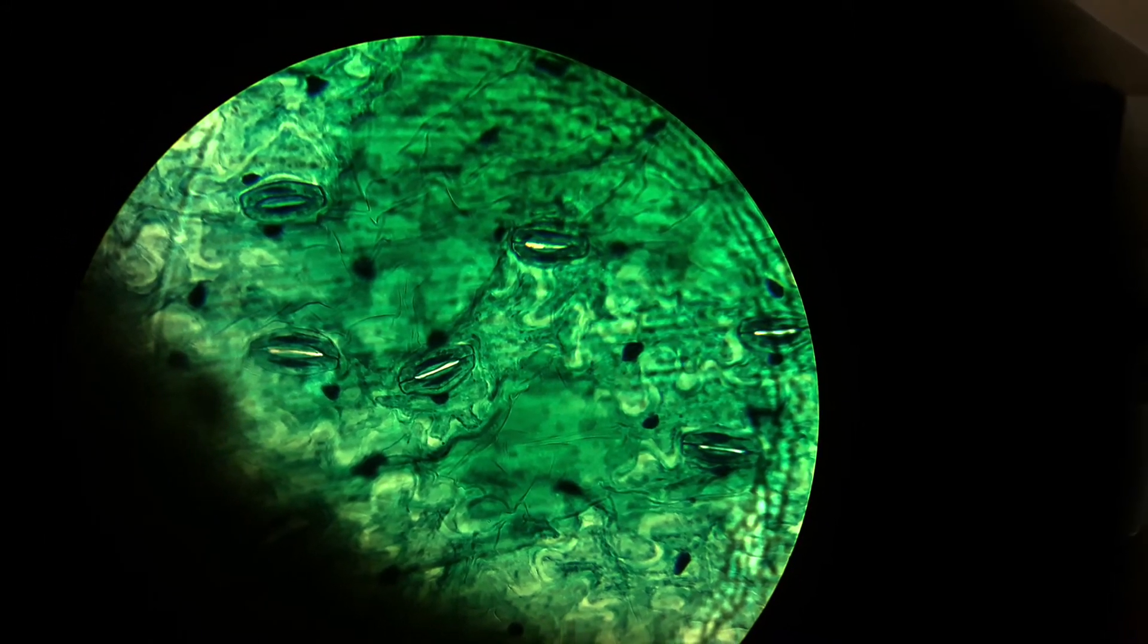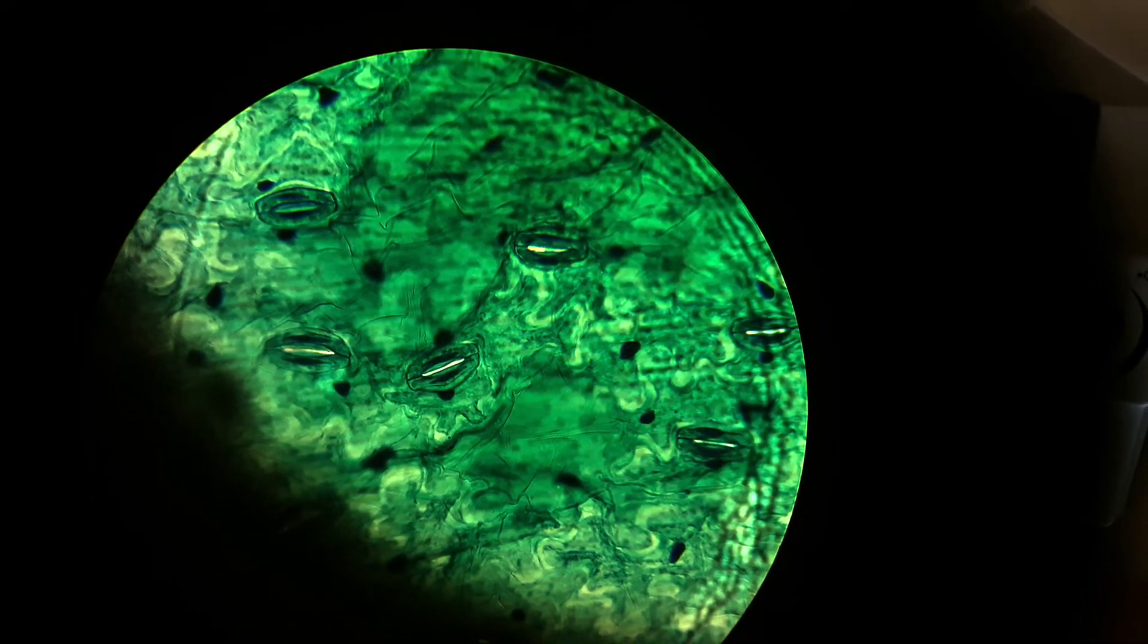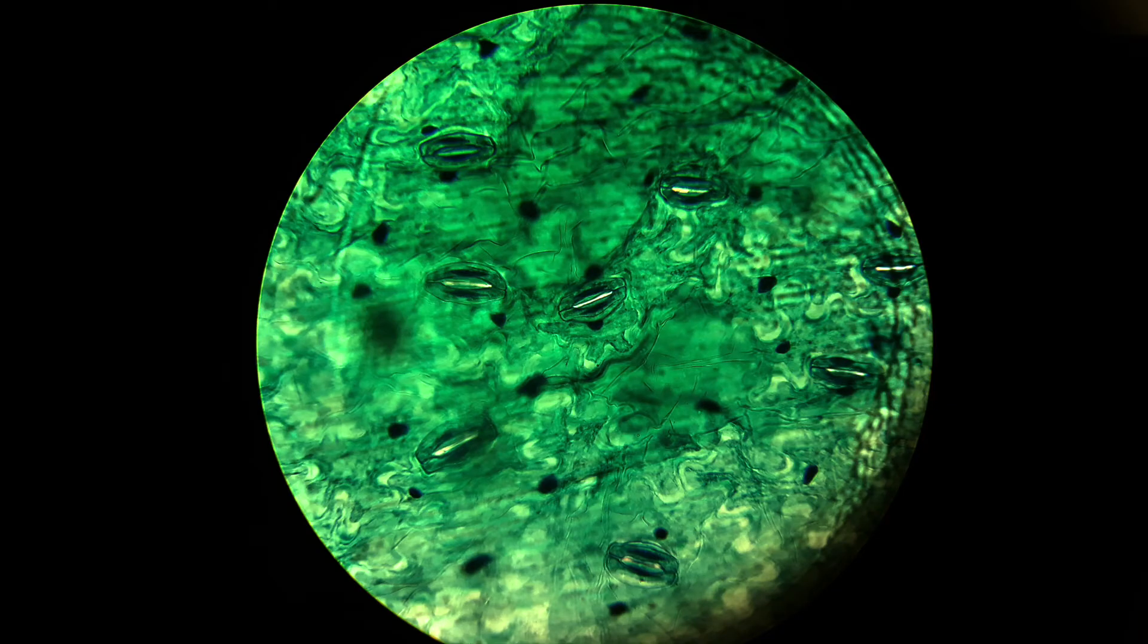Stomata play an important role in gaseous exchange and photosynthesis. They control the transpiration rate by opening and closing. It also helps in transpiration and removal of excess water in the form of water vapor. The stomatal closure at night prevents water from escaping through pores. It maintains the moisture balance according to weather by opening and closing.